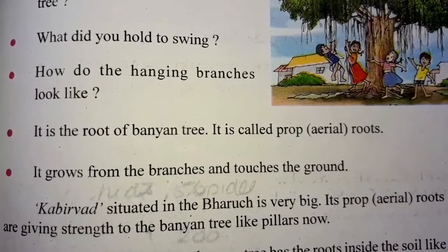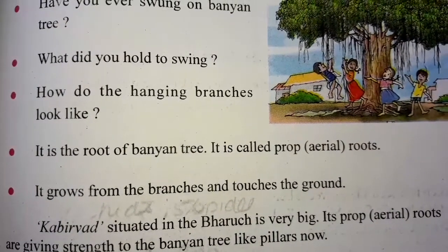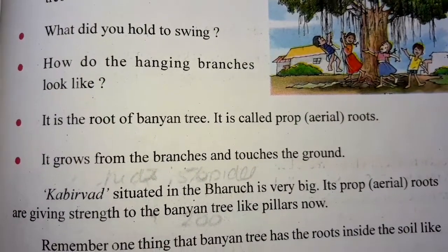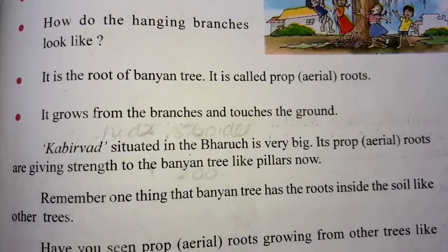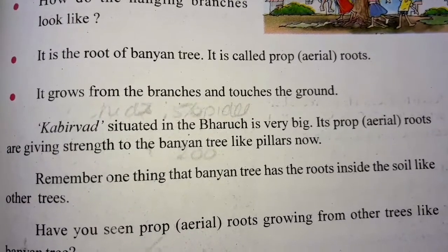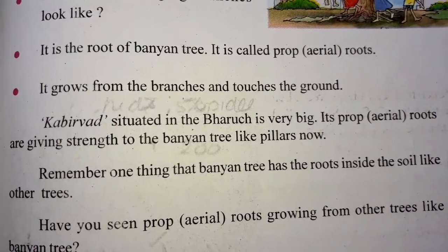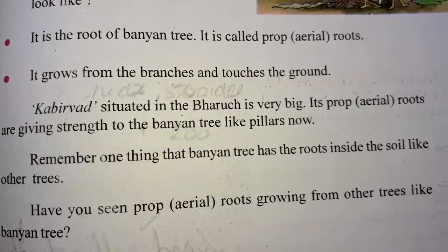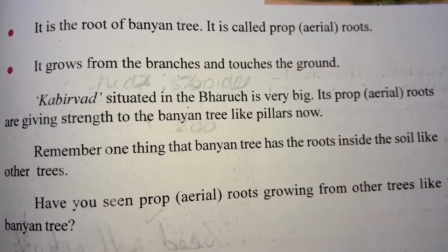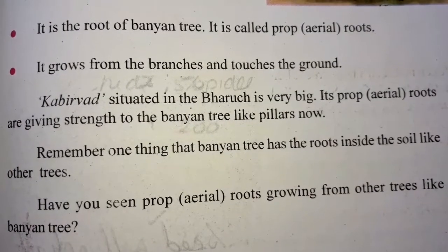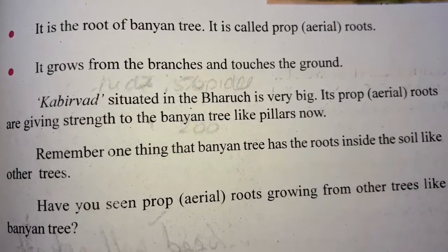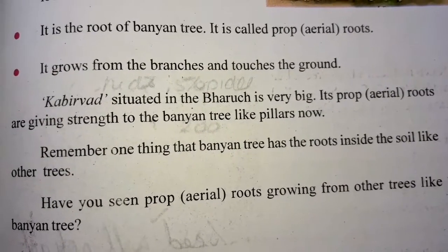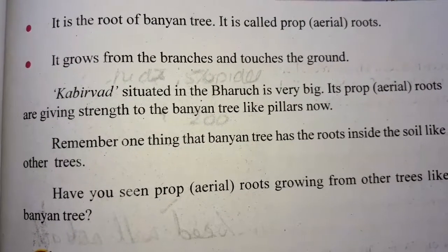It grows from the branches and touches the ground. Ta ye oopar se, yani branches se oopar se aati hai, aur niche ground ko touch kerti hai. So, kabhi rwad situated in Bharuach is very big. Woha bhoot hi bada banyan tree hai. Its prop roots are giving strength to the banyan tree like pillars. Uski joh prop roots hain, woha usko eig dam pillars ke jaise, yani joh khambhe hote hain, usse woha usko strength dheti hai khadai rhenne ke liye.